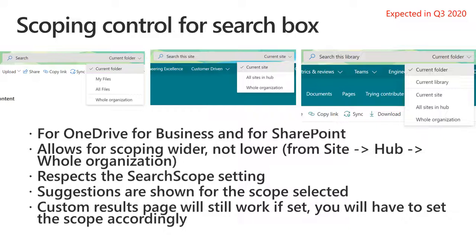There's a subtle line indicator in the scoping control showing you're jumping to another experience. If you're in OneDrive for Business and select whole organization and submit a search, we'll open a new tab and take you to SharePoint start page for the enterprise search experience. Similarly, if you're in a library in SharePoint sites and switch to current site or all sites, we'll open a new tab for the site or hub search experience. If you've set a custom results page for the new search box, that will continue to work.